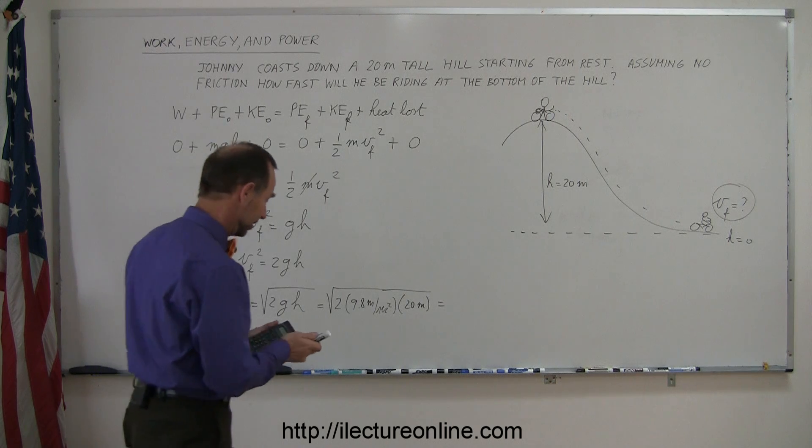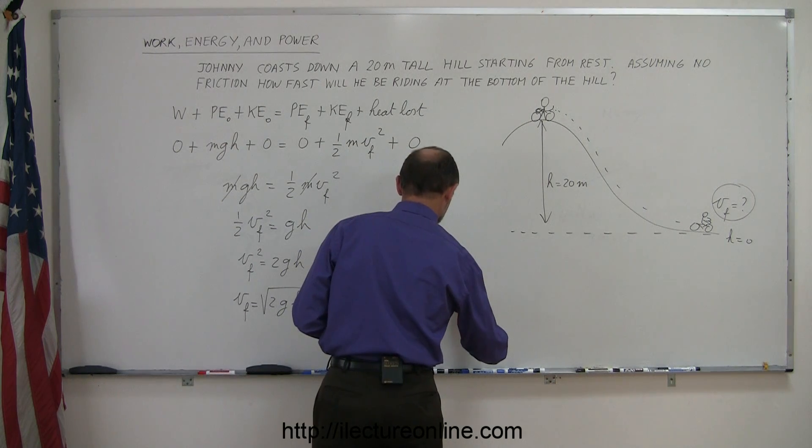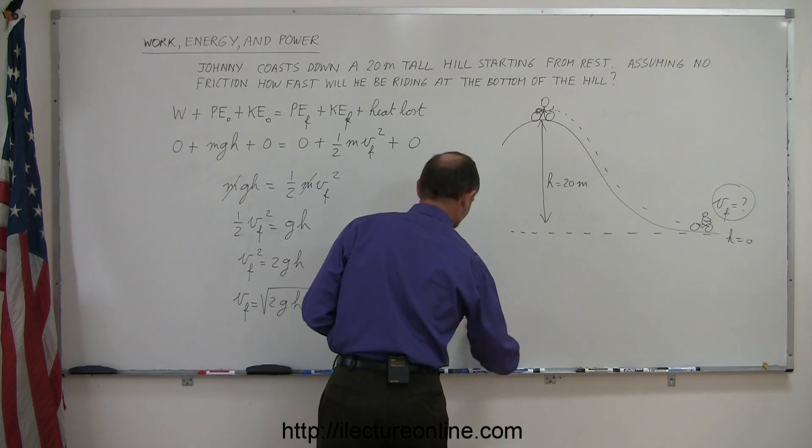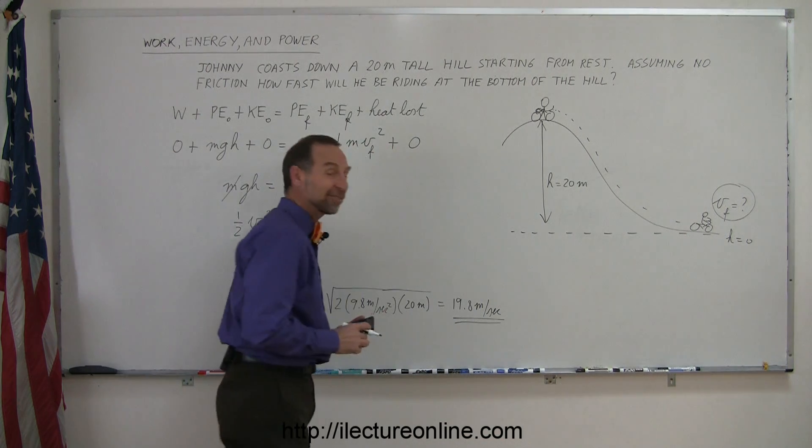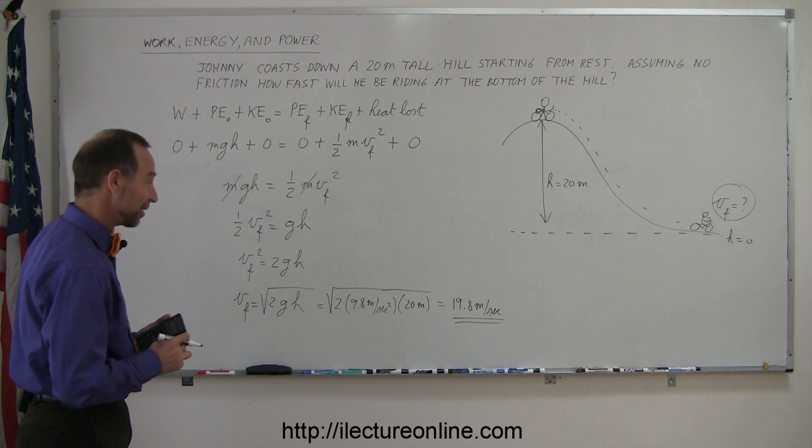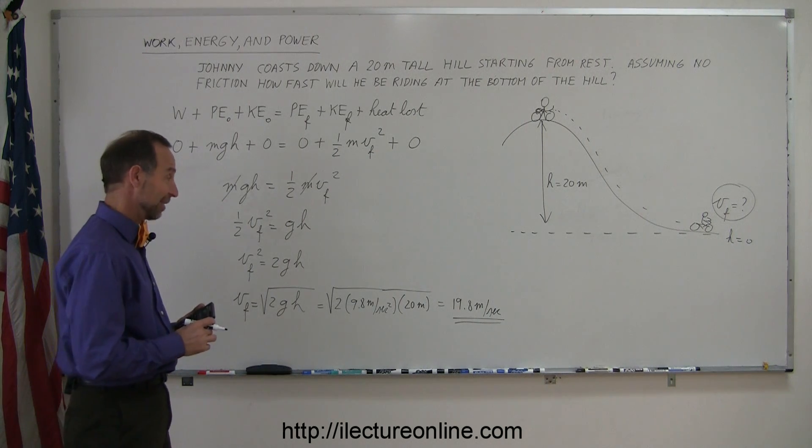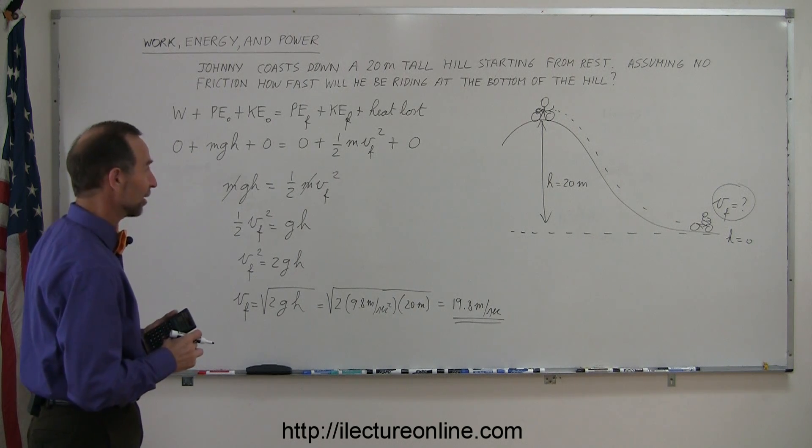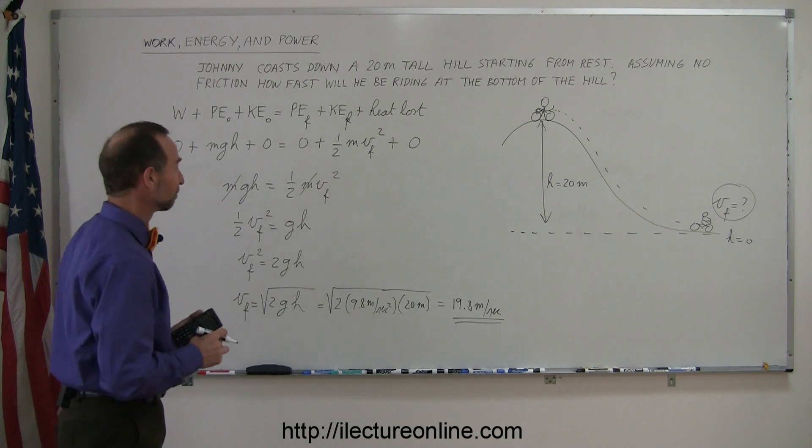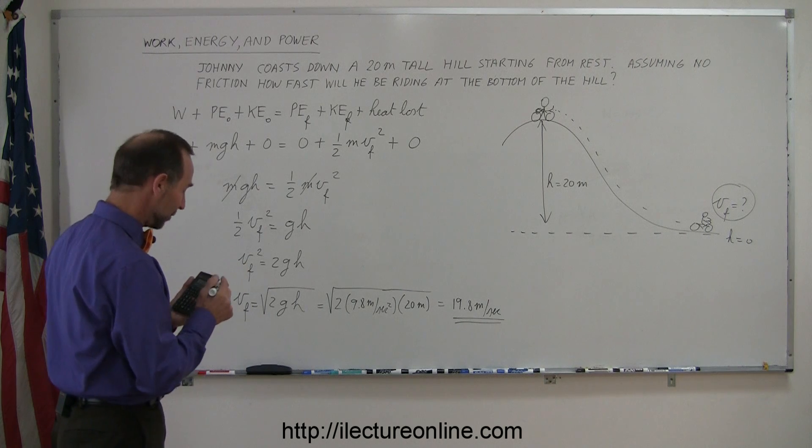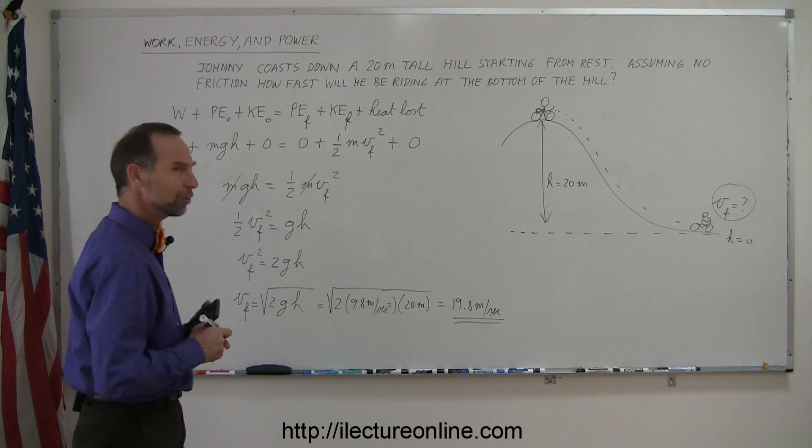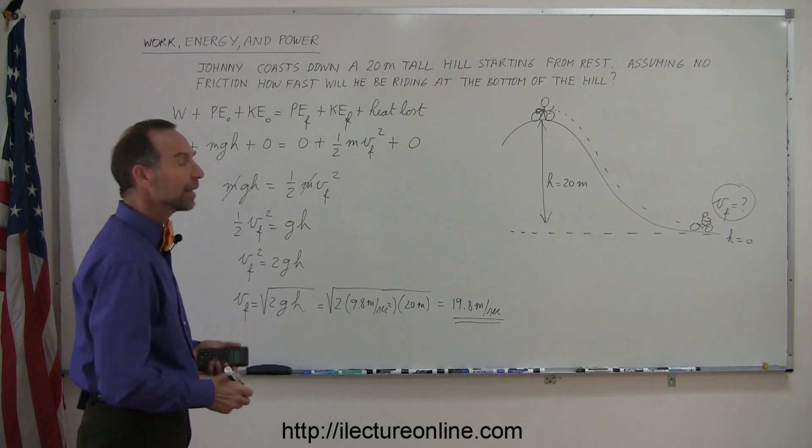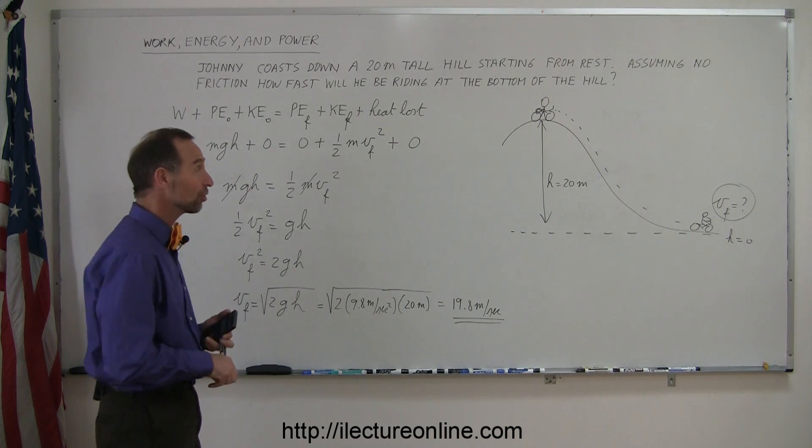That is actually pretty fast. 19.8 meters per second. If there was a sign at the bottom of the hill saying don't go faster than 35 miles per hour, I think he's going faster than that. So yeah, 19.8 meters per second is moving along pretty quick. Johnny better have some good brakes on that bicycle. All right, so there's a good example of how to do that. Let me now do another example where we're going to use friction as something is coming downhill and see how that changes the problem.